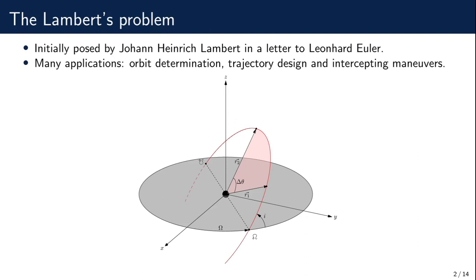Because it tries to find an orbit with a minimum amount of information, the Lambert's problem is usually included within the initial orbit determination subject. However, it has other applications related with interplanetary and intercepting maneuvers, trajectory design and quick mission analysis.